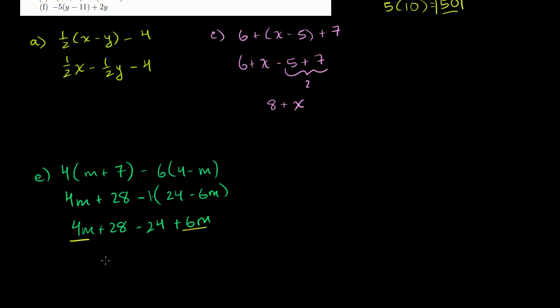Now you add the m terms. 4m plus 6m is 10m. And then add the constant terms, 28 minus 24. That is equal to plus 4.